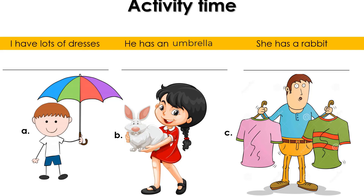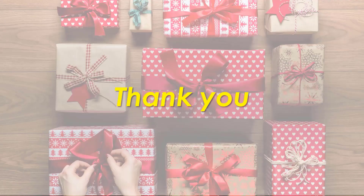Now it's time for the activity. There are three pictures — look at picture A carefully, look at picture B carefully, and observe picture C. There are three sentences for you to complete. I hope you enjoyed the bonus tip and this activity. Thank you so much!